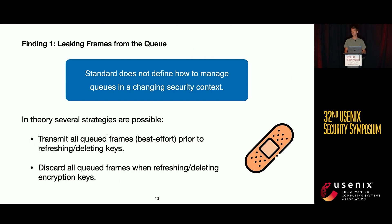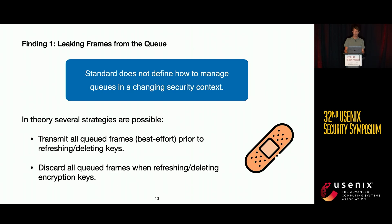These issues exist because the standard does not define how queues should be properly managed when the security context changes. There are two main approaches to solve this: either transmit all queued data before manipulating the security context — a best-effort approach, though it doesn't guarantee delivery — or alternatively, whenever an encryption key is refreshed or deleted, purge all the queues so that data is lost but not leaked.